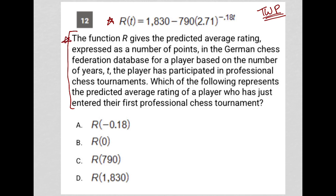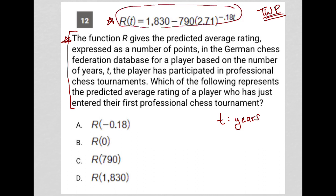So let's read the question and see exactly what we're being asked to do. The question says the function r gives the predicted average rating, expressed as a number of points in the German Chess Federation database, for a player based on the number of years t the player has participated in professional chess tournaments. So I know that t is years — that's the first thing I'm going to translate.